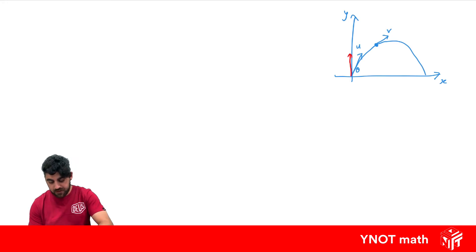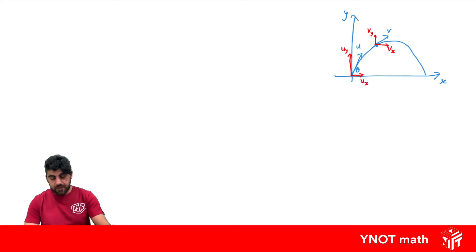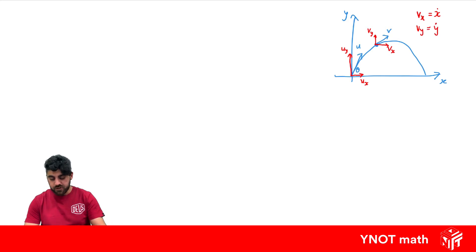Initially, we'll have an initial velocity in the y direction and an initial velocity in the x direction. At some point we'll have velocities in the x and y direction. The velocity in the x direction we can call x-dot, and the velocity in the y direction y-dot. Which means acceleration in the x direction is x-double-dot, and the acceleration in the y direction is y-double-dot.